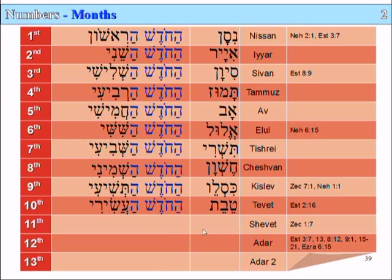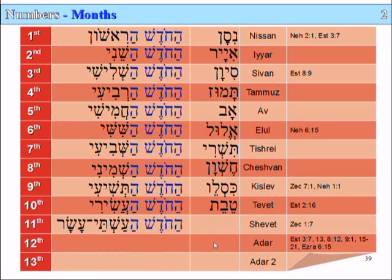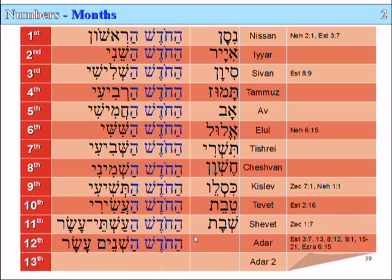We have the tenth month, Tevet, mentioned in Esther. The eleventh month is HaKhodesh Ha-Ashtei-Asar, or Shevat. And the twelfth month is HaKhodesh HaShneim-Asar, or Adar.